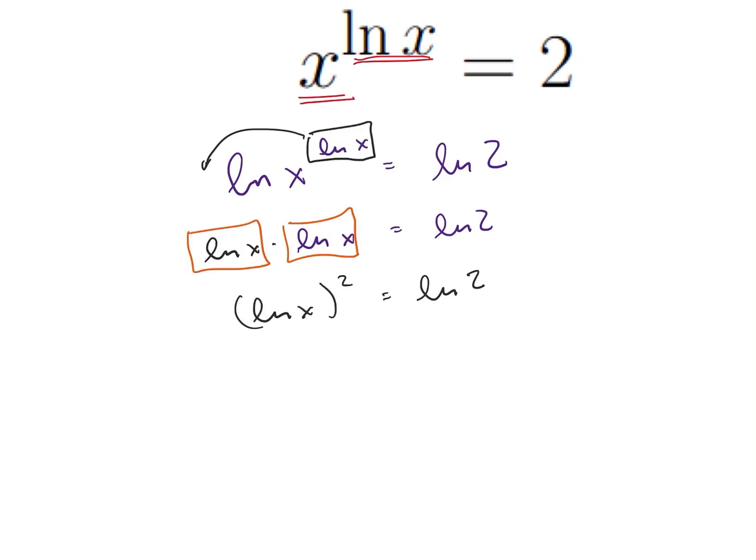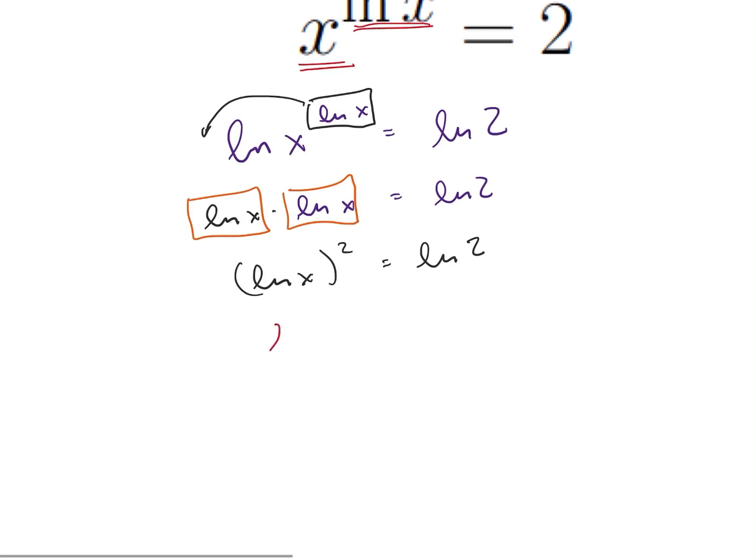So now we just need to solve for ln of x. So let's go ahead and take the square root of both sides. We get ln of x is equal to the square root of ln of 2.